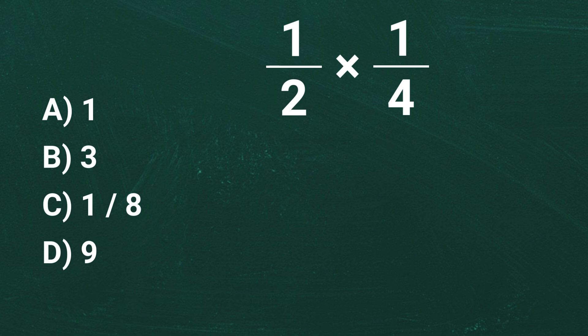Since everything is fully simplified, we are ready for the final step, multiplication. Multiplying the numerators, 1 times 1 equals 1. Multiplying the denominators, 2 times 4 equals 8. So the simplified result is 1 over 8.